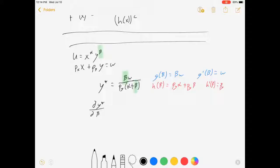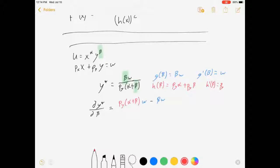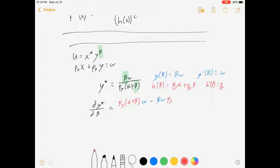So my derivative of y with respect to beta is—what was it? It was low d high, so h times g prime, so py times alpha plus beta times g prime, which is just w, minus high, which is the g, beta w, d low, which was h prime, which is py. Low d high minus high d low, all over low squared, which was py squared times alpha plus beta squared.